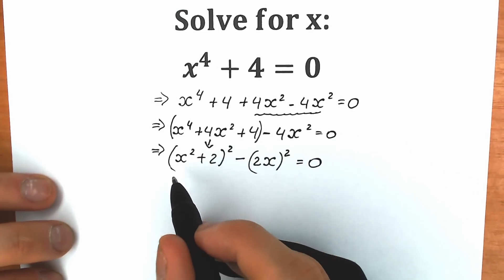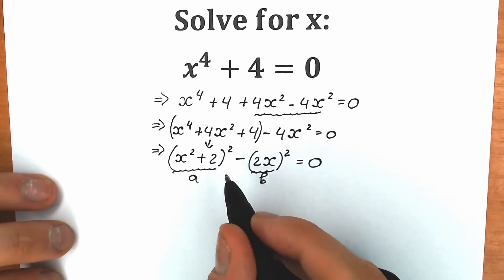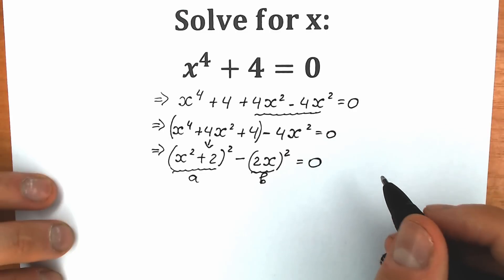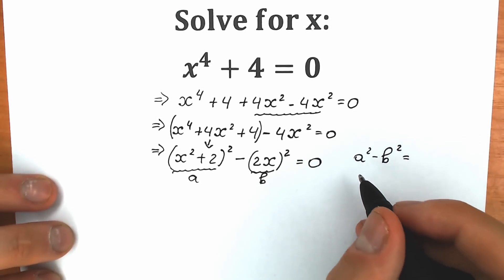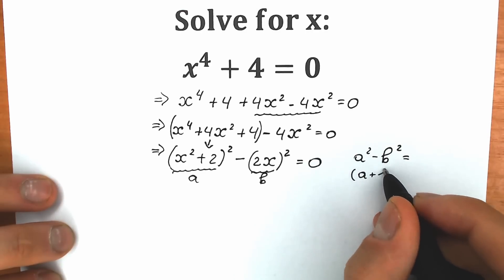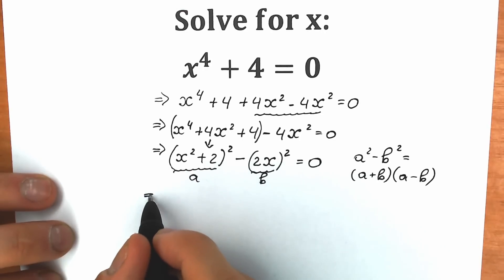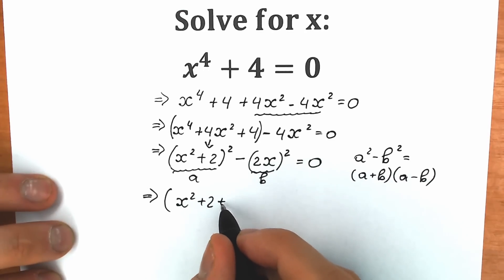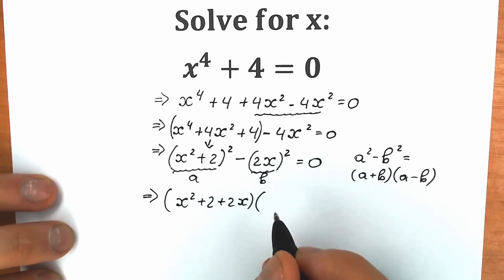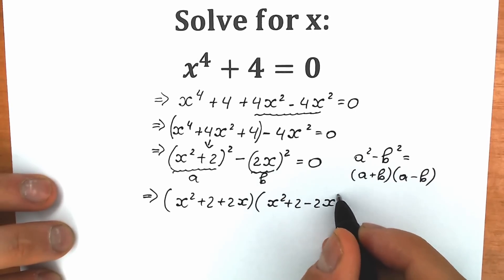Now let's treat this as a difference of squares. We can do this because we have a² minus b², where a is (x² + 2) and b is (2x). According to the school identity, a² minus b² equals (a + b)(a − b). So in the first parenthesis we have x² + 2x + 2, and in the second parenthesis we have x² − 2x + 2, equal to 0.